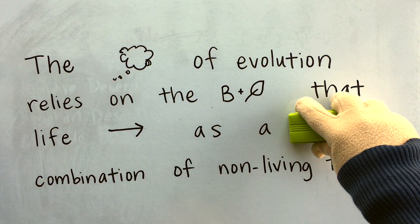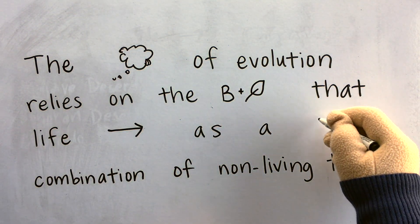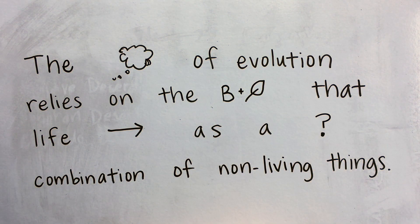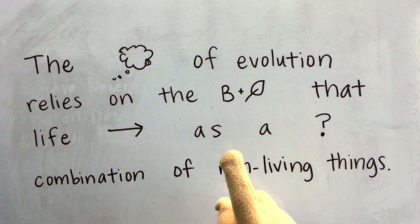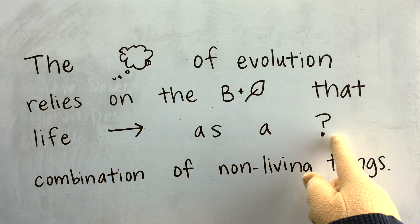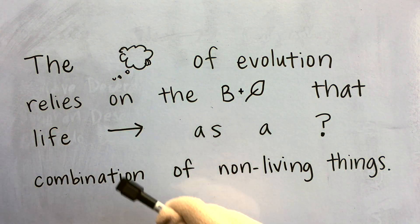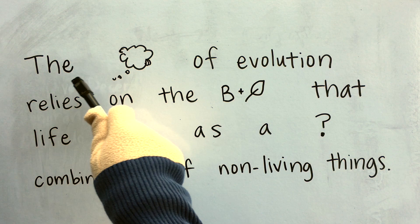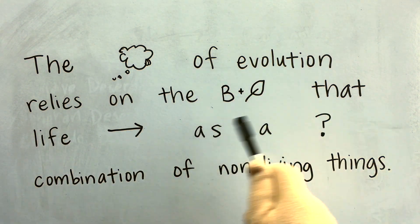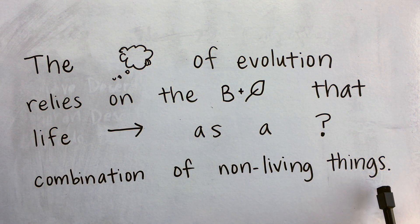Now let's change the word chance to a question mark. Have you ever played Monopoly? There are two kinds of cards — Community Chest and Chance — and Chance has a question mark. So we're going to put a question mark there. The theory of evolution relies on the belief that life began as a chance combination of non-living things.